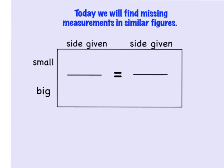The strategy that we're going to be using for finding missing measurements of similar figures, I like to call it the box method. It's actually just setting up a proportion, but what we have found is a lot of times kids can set up the proportion, but they don't always get the right measurements in the correct spot in the proportion, and therefore solve and find an incorrect answer. The box method will help you avoid putting things in the wrong spot in your proportion.